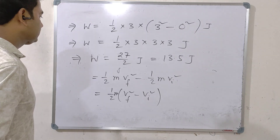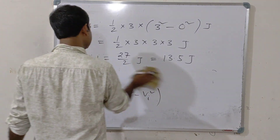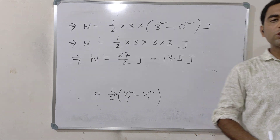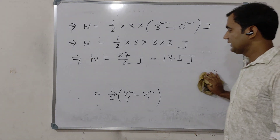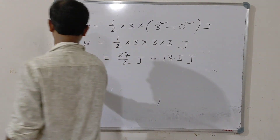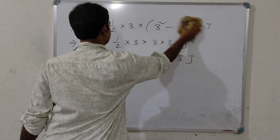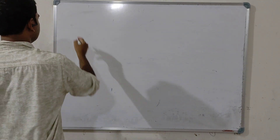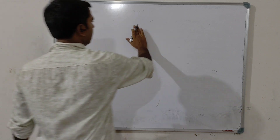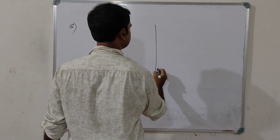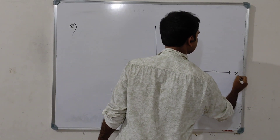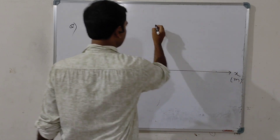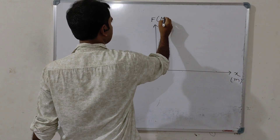Now consider the second numerical, in which a graphical representation of force versus displacement is given. The force versus displacement curve has x in meters and force in Newtons.